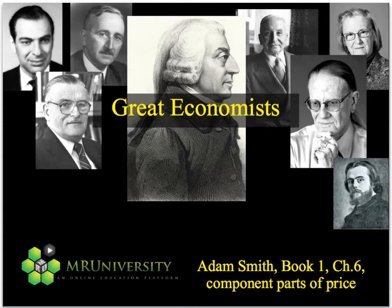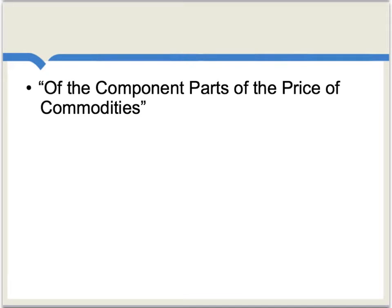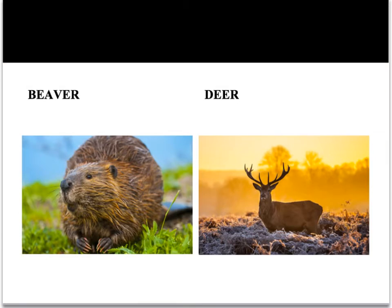In Book 1, Chapter 6, we get maybe the clearest view of how the labor theory of value fits into Smith's analytic vision. This chapter is called 'Of the component parts of the price of commodities.' Smith here will be using his famous example of beaver and deer and the relative labor costs of hunting beaver and deer as an explanation for where market prices come from.